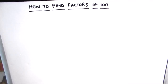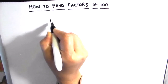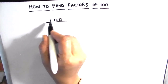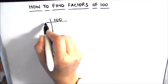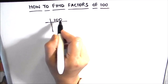Hello students. In this video we are going to learn how to find the factors of 100 using the prime factorization method. For finding the factors of 100 using the prime factorization method, we are going to write 100 in the single letter like this and we'll divide it by prime numbers.